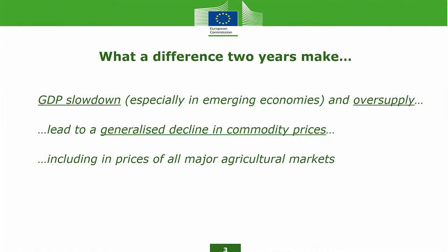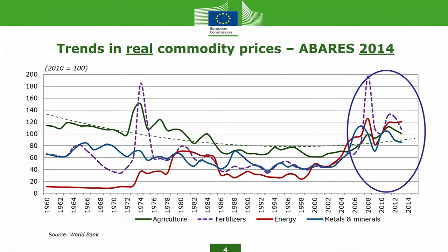I will start by focusing on the difference that two years make. I was here back in 2014. What we've seen since is a generalized GDP slowdown, especially in emerging economies, and oversupply that leads to a generalized decline in commodity prices — still leading. That includes also prices in all major agricultural markets. This is a graph I presented two years ago: the real commodity prices of the World Bank index, with green representing agricultural prices.